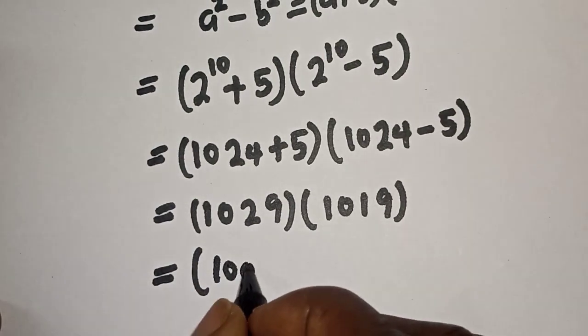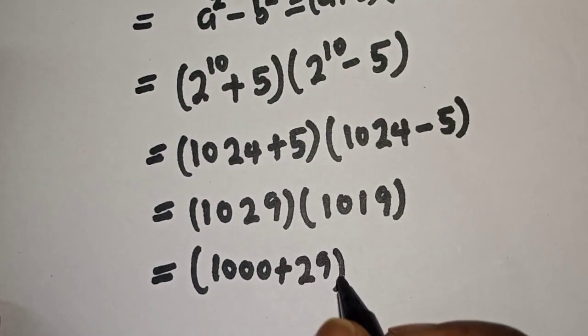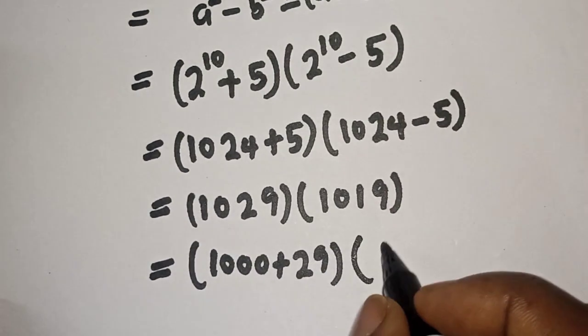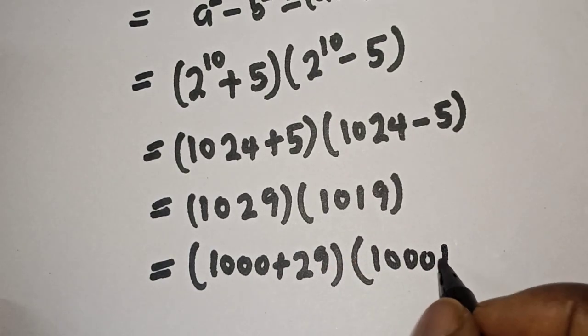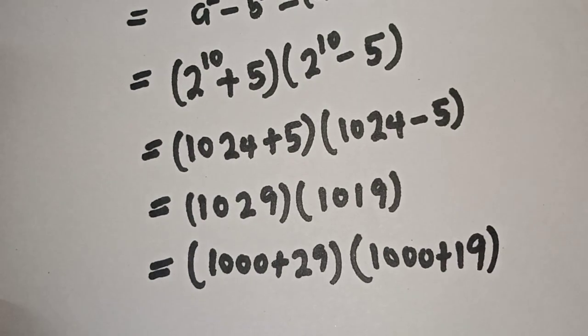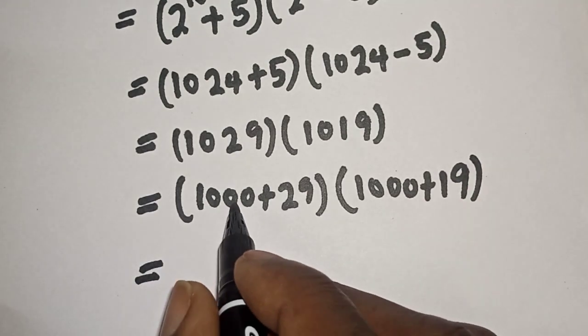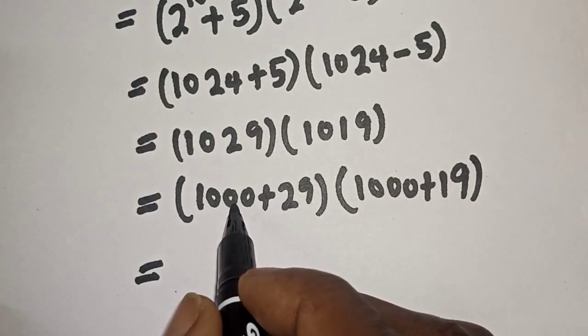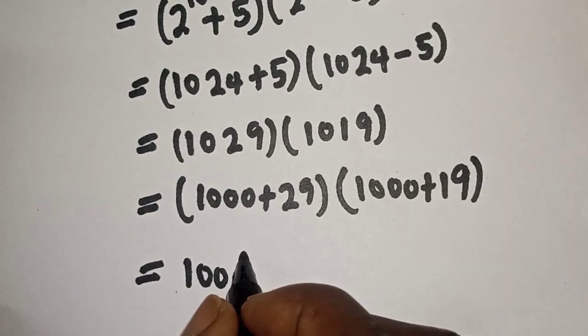Then this is equal to 1029 can be written as 1000 plus 29, and 1019 as 1000 plus 19. Then this is equal to, let's multiply out, we have 1000 times 1000, we have 1000 square.